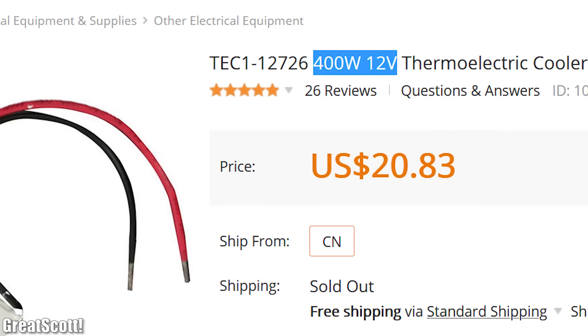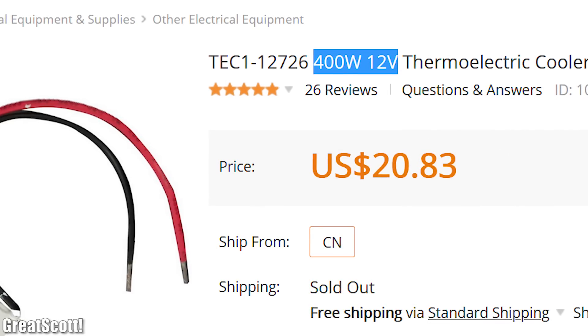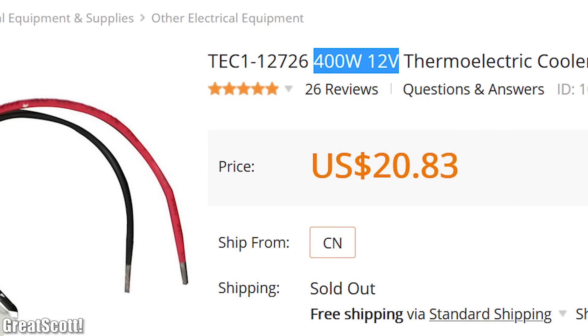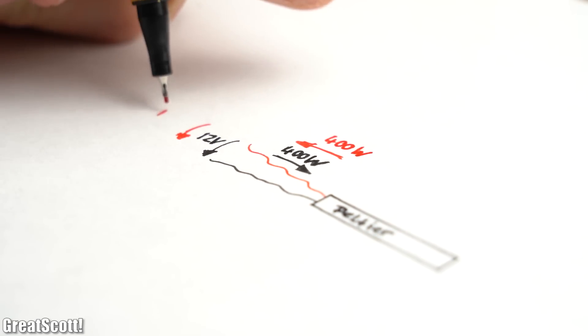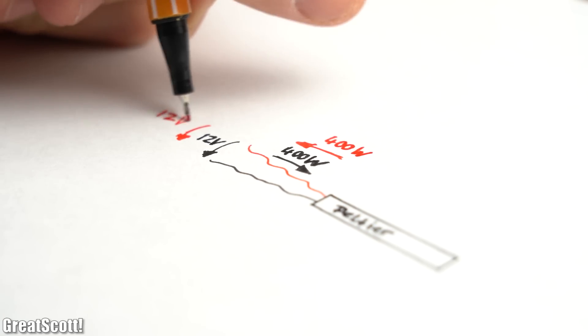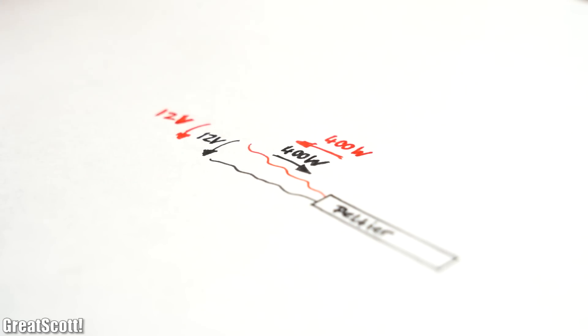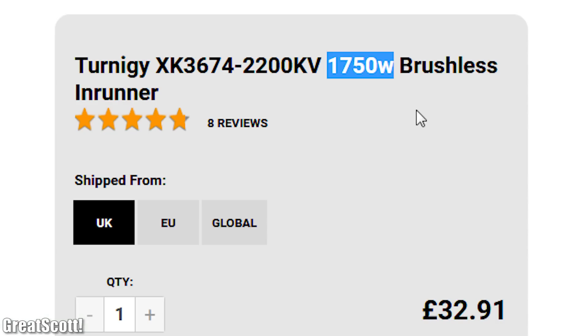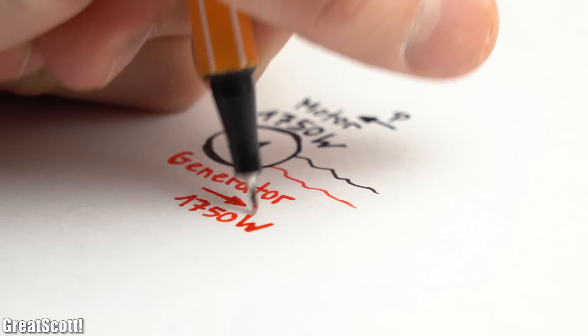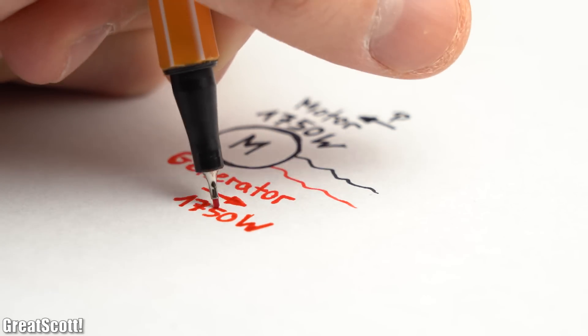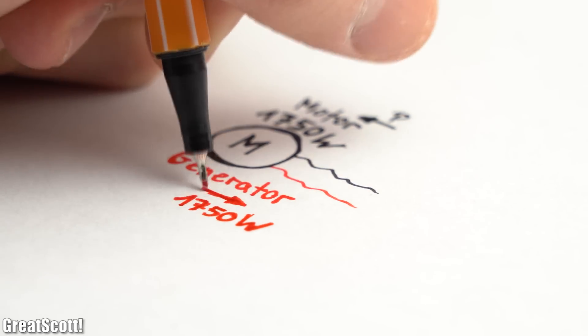What I think happened is that the original creator saw the 12V 400W rating of the module and thought that it should be easily possible to create the same electrical output power when using it as a generator. But just like with a powerful motor, it does not mean that you can easily get the rated values out of it as electrical energy when using it as a generator.